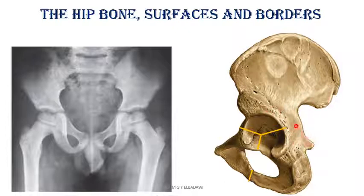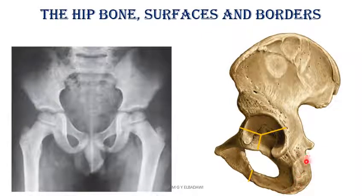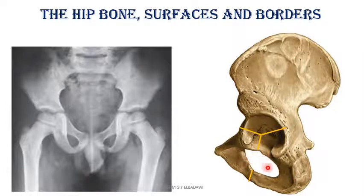Here you can see the greater sciatic notch and the lesser sciatic notch, with the ischial spine in between. You can see the body of the ischium and the ischial ramus — these are the two parts of the ischium. There is the anterior border, posterior border, and lateral border of the body of the ischium. You can see the ischial tuberosity, the femoral surface, the gluteal surface of the ischium, and the obturator foramen. The acetabulum shows the fossa, the notch, and the lunate articular surface.